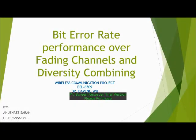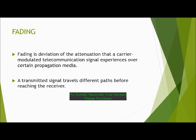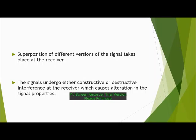Now let us proceed towards the presentation. Fading is the deviation of the attenuation that a carrier-modulated telecommunication signal experiences over certain propagation media. A transmitted signal travels different paths before reaching the receiver. Superposition of different versions of the signal takes place at the receiver, and the signals undergo either constructive or destructive interference, causing alteration in the signal properties.